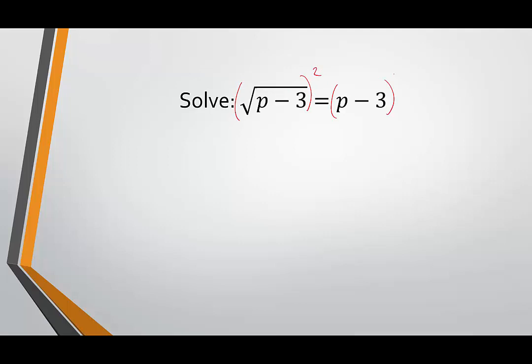When we square both sides, we square the entire side — you don't do each individual piece, you do the entire side. Here, the square and the square root will cancel, giving us p minus 3.